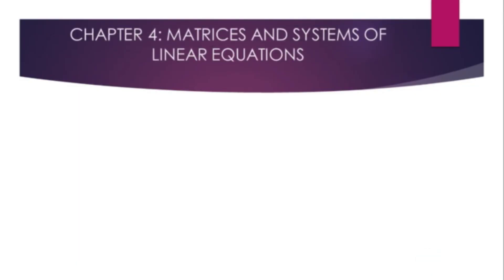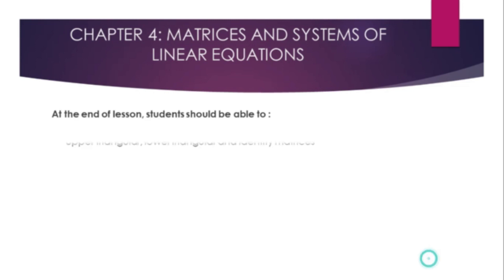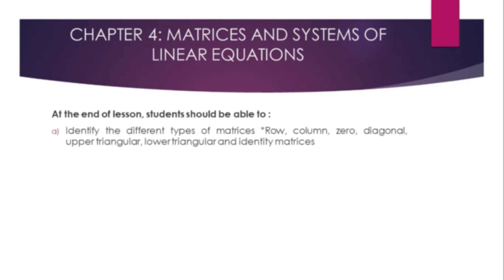Chapter 4: Matrices and Systems of Linear Equations. At the end of the lesson, students should be able to: A. Identify the different types of matrices — Row, Column, Zero, Diagonal, Upper Triangular, Lower Triangular, and Identity matrices.